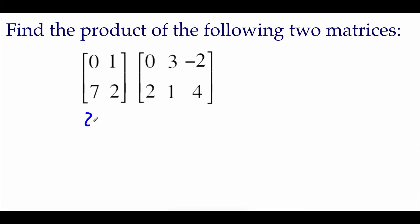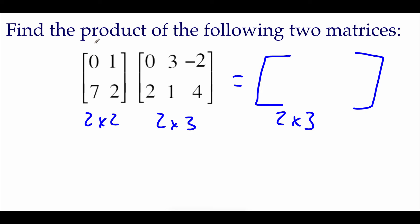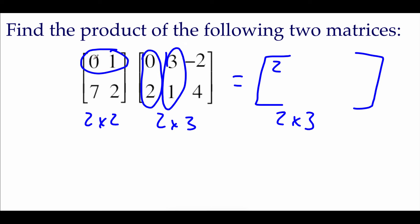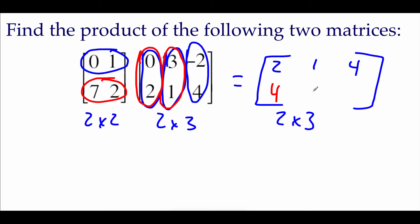Next example: a two by two matrix times a two by three matrix, so we'll get a brand new two by three matrix. First row times first column: zero times zero is zero, one times two is two — add those, we get two. First row times second column: zero times three is zero, one times one is one — we get one. First row times third column: zero times negative two plus one times four gives us four. Second row times first column: seven times zero is zero, plus four is four. Second row times second column: seven times three is twenty-one, plus two is twenty-three. Second row times third column: seven times negative two is negative fourteen, plus eight gives negative six.